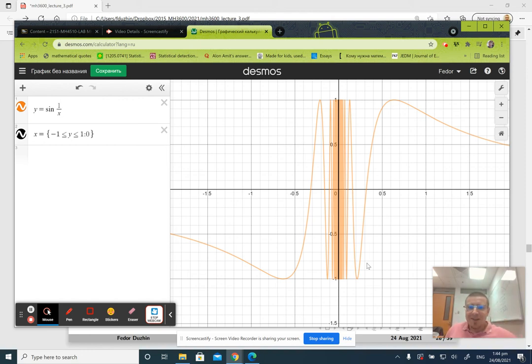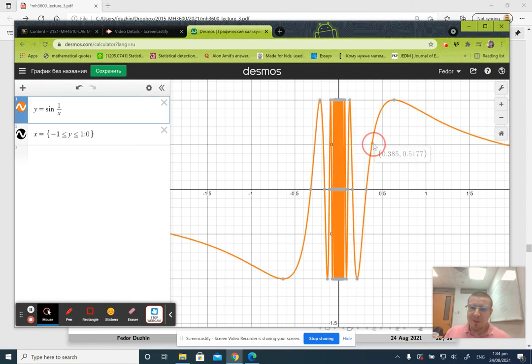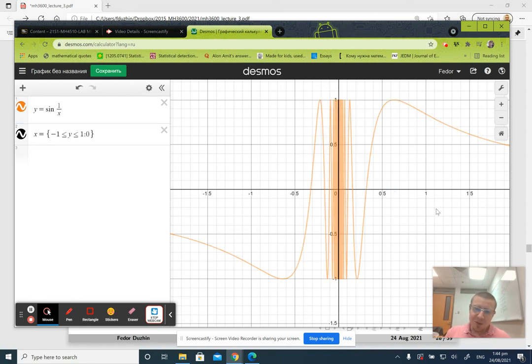On the other hand, this is not path connected because if you take a point somewhere here on the right and somewhere here on the left and try to connect them by a continuous path, the path would have to go up and down infinitely many times, which is impossible. That's the idea, but again it is not a rigorous proof, just an intuition.